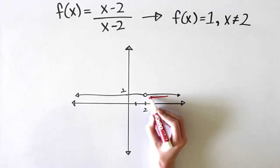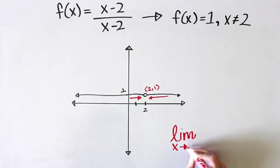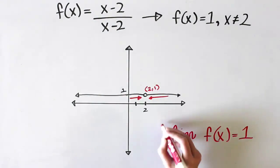On this graph, the function approaches 1 from both the left and the right sides, so that we can say that the limit of f of x as x approaches 2 is 1.